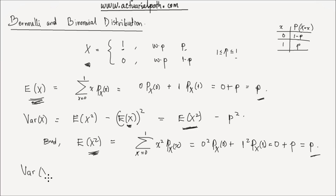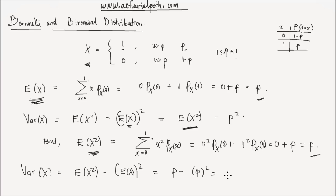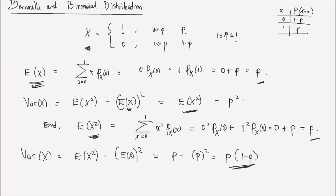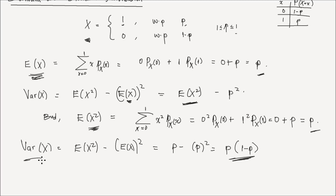Therefore, the variance of a Bernoulli random variable x equals the expected value of x squared minus the mean squared, which is p minus p squared. Factoring out p gives p times 1 minus p. So the variance of a Bernoulli random variable equals the probability of success times the probability of failure — easy to remember.